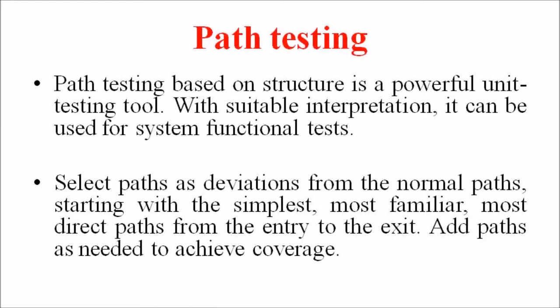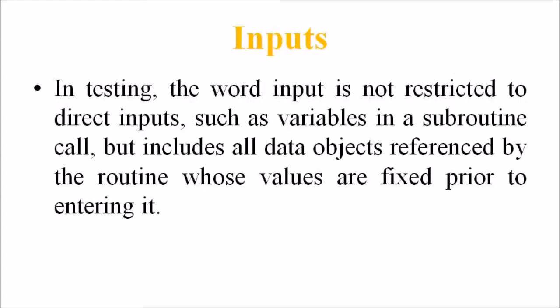Path testing based on structure is a powerful unit testing tool. With suitable interpretations it can be used for system functional testing. The objective of path testing is to execute enough tests to assure that, at a minimum, C1 plus C2 conditions have been achieved. Selecting paths as deviations from a normal path, starting with the simplest, most familiar, most direct path from entry to exit point, is very important in program decoding.